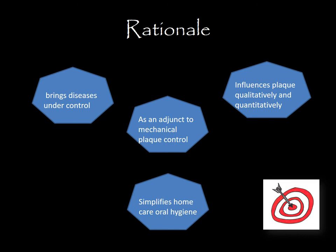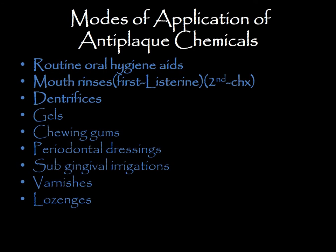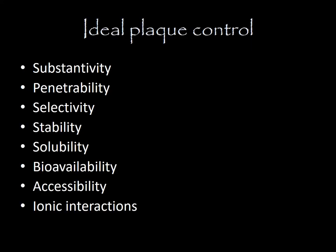Chemical plaque control rationale: it brings diseases under control, is used as an adjunct to mechanical plaque control, influences plaque qualitatively and quantitatively, and simplifies home care oral hygiene. Mechanism of action: by inhibition of plaque development, elimination of existing plaque, inhibition of calcification of plaque, and inhibition of microbial colonization on tooth surfaces. Modes of application include mouth rinses, dentifrices, gels, chewing gums, periodontal dressings, subgingival irrigations, varnishes, and lozenges. An ideal plaque control agent should have substantivity, penetrability, selectivity, stability, solubility, bioavailability, accessibility, and ionic interactions. The most important property is substantivity — the ability of an agent to bind to tissue surfaces and be released slowly over time.